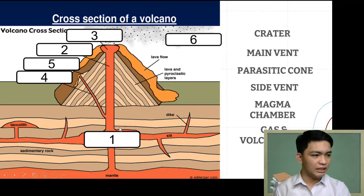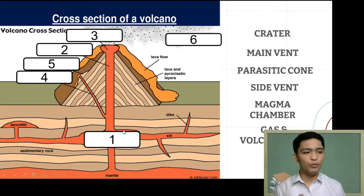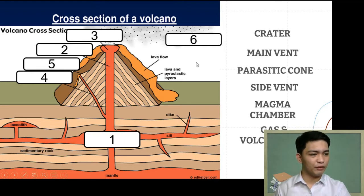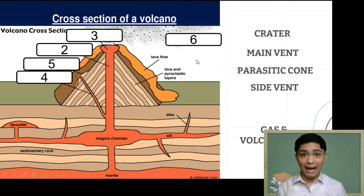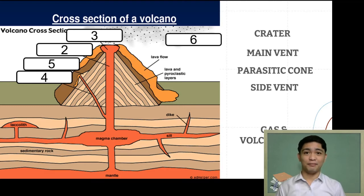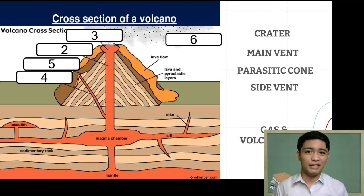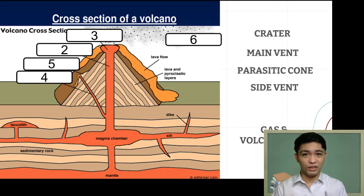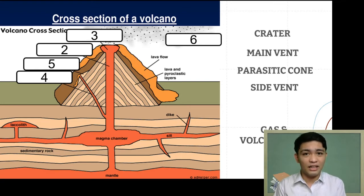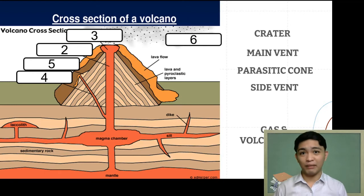For the first part — labeled number one — this is what we refer to as the magma chamber. Given the term itself, it is the chamber that contains the magma beneath the volcano — the pool of magma below it. When we talk about volcanoes, we often hear the word magma. Magma pertains to molten or liquefied rock underneath the earth's surface, where the temperature and pressure are very high, causing solid rock to turn into liquefied rock.